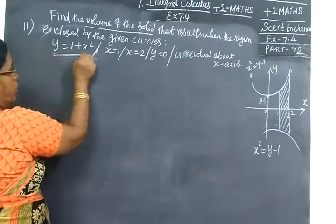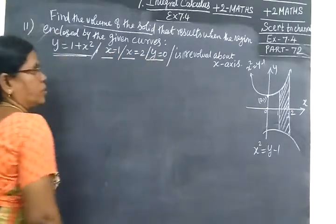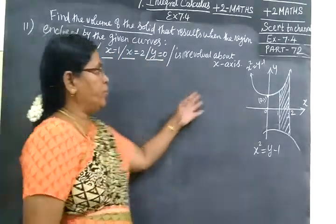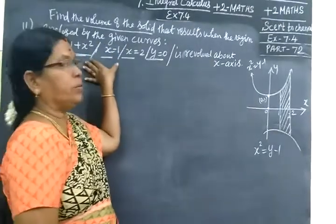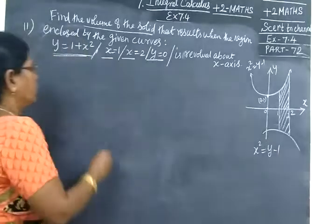Y equal to 1 plus x² and x equal to 1, x equal to 2, Y equal to 0 is rotated about the x-axis. So in this problem we will see volume of the solid.